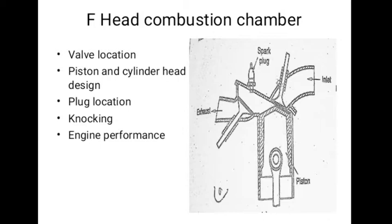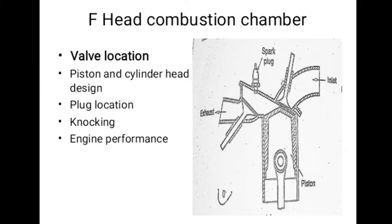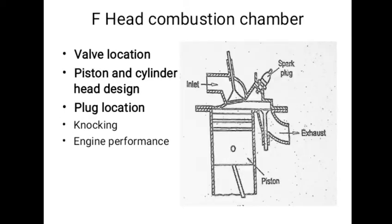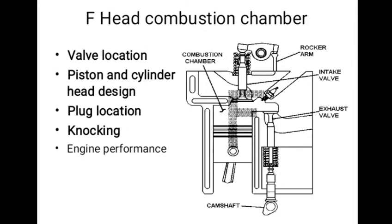In this type of combustion chamber, in which one valve is located in head and other in block, is known as F-head combustion chamber. This arrangement is a compromise between L-head and H-head combustion chambers. In the present F-head design, inlet valve is located in the head and exhaust valve in the block. It consists of crown-shaped piston and correspondingly sloping cylinder head. The plug is located in the flat roof, which allows use of inlet valve bigger than the exhaust valve. This provides the shortest flame travel and therefore the possibility of knock is very rare.